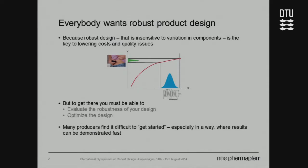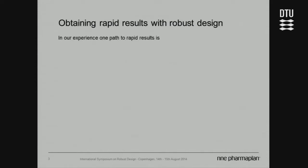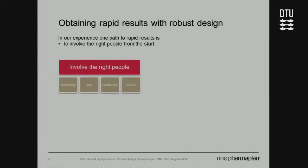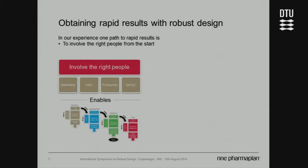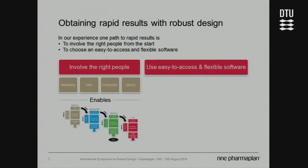In our experience, however, many companies have difficulties getting started using robust design, and getting started in a way where they can see results rapidly. One path to robust design with rapid results would be to involve the right people — marketing, R&D, production, and QA — in one sitting to build a solid house of quality, transforming customer requirements into product, component, and process specifications. The topic of today is how to use easy-to-access and flexible software to get there and achieve rapid results, because easy software allows a fast startup, and a fast startup enables fast results, which pleases management.